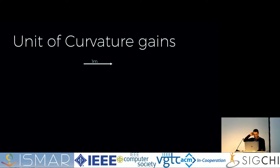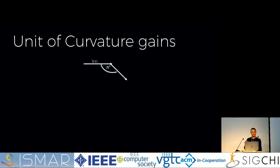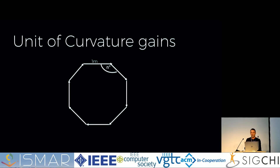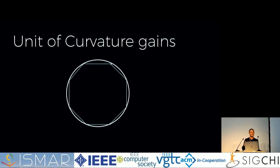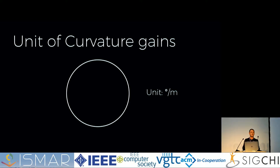Let's take one step back and see how curvature gains can be described. When a user walks, curvature gains can be described by a rotation applied after a certain distance — so if the user walks one meter, it will be rotated by n degrees. As a result, he will walk on a circle over a longer time. The gains are not applied at once, but evenly distributed over the whole distance. We can therefore express curvature gains in the unit degrees per meter: after a meter of walking, you will be rotated by a certain amount of degrees.